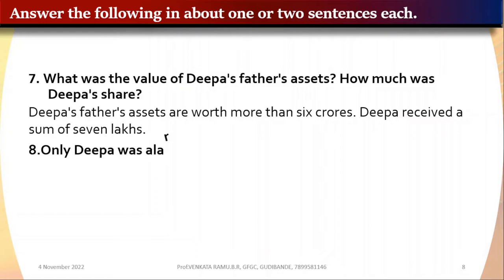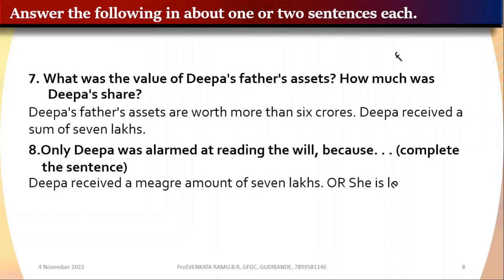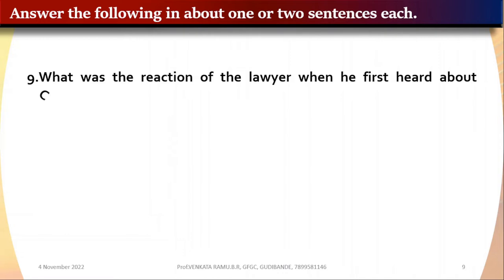Question 8: Only Deepa was alarmed at reading the will because — complete the sentence. Possible answers: Deepa received a mere amount of seven lakhs; or she was left with a small share of her father's property; or she was discriminated against. Any one of these possibilities can be the answer.